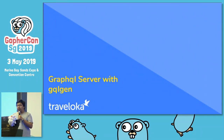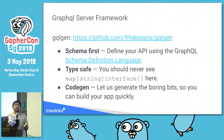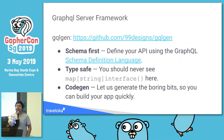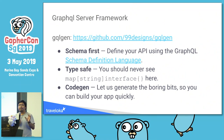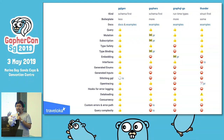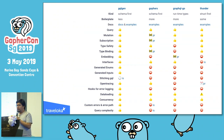For GraphQL server implementation, we use gqlgen — an open source project created by 99designs, available on GitHub. It has three important benefits: first, schema-first, meaning you define the schema and then focus on the API; second, it's type-safe, so you won't see 'map string empty interface' anywhere; third, it has a code generator that generates a lot of boilerplate so you can focus on your app. This is a comparison showing gqlgen has more features than other Go GraphQL servers like graphql-go or Thunder.